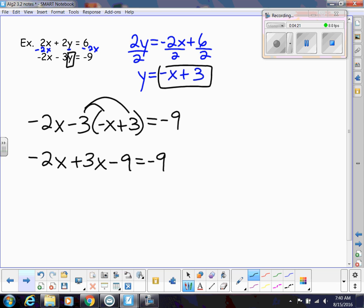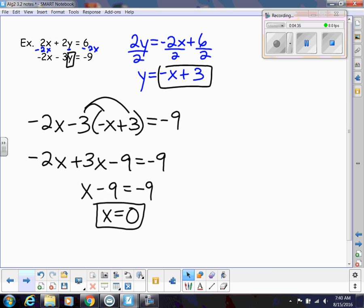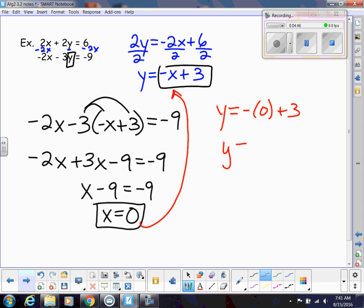And then I'm going to combine like terms. So this is going to give me 1x. If I add 9 to both sides, then I get x equals 0. And that's okay. Don't let that freak you out. That is totally okay to have an answer like that. And then we're going to do step 3, which is to plug that back into that step one equation. y equals negative 0 plus 3. So y is equal to 3. So our answer is 0 comma 3.